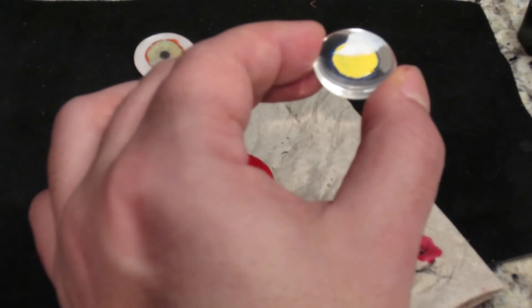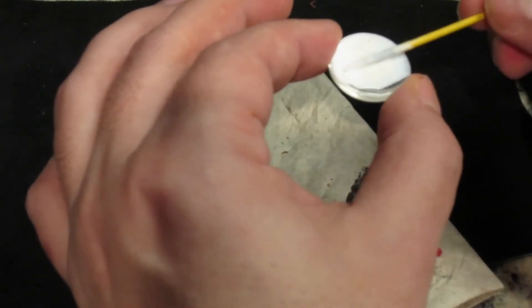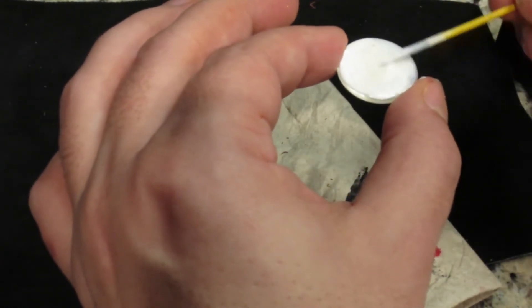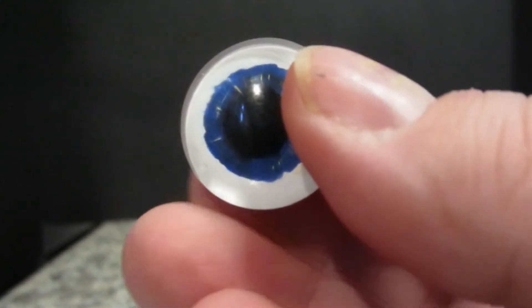For the other eyes, I use white acrylic paint on the rest of the back to create the white of the eye. And here they are. Quick, easy, glass cabochon eyes.